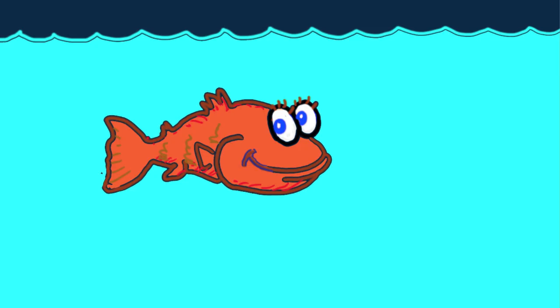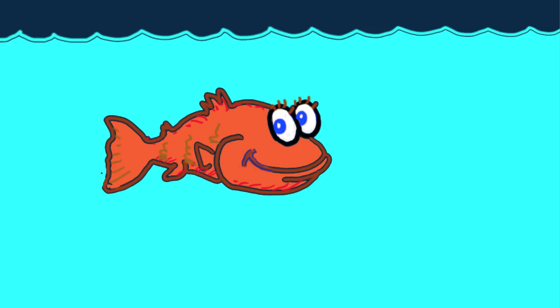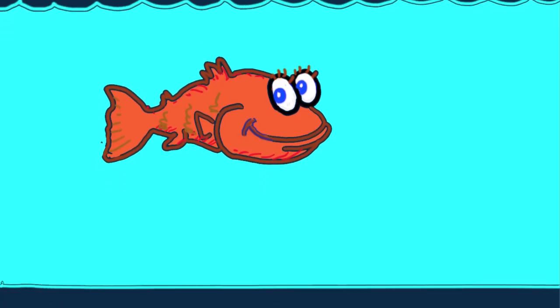These simple cases of a block and a fish beneath water apply the same reasoning no matter what the shape of the object. Some part of anything submerged is always deeper than other parts, so there will always be unequal pressures, and the horizontal components cancel out.